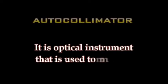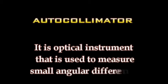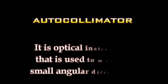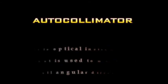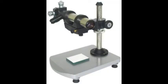The first one is the auto collimator. The auto collimator is an optical instrument that is used to measure small angular differences. This device is very sensitive to changes in angles and provides very accurate measurement of angular differences. It is basically a combination of an infinity telescope and a collimator. Auto collimators are mainly used to align optical components and measure optical and mechanical deflections.